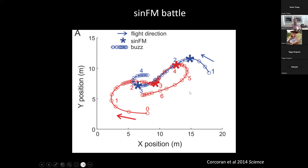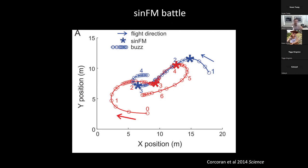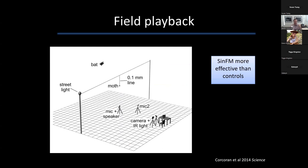This is showing an example of the mapping — you can really see this is a competitive kind of battle interaction. The red bat is coming through and does a feeding buzz trying to capture the prey. The blue bat does a Sine-FM signal. The red bat misses. They go back and forth, weaving into the same spot and missing the prey. Then after three or four rounds, the blue bat has a chance to capture the prey — the red bat gives up and the blue bat does successfully capture the prey. This really illustrates that this is a competition between the bats.